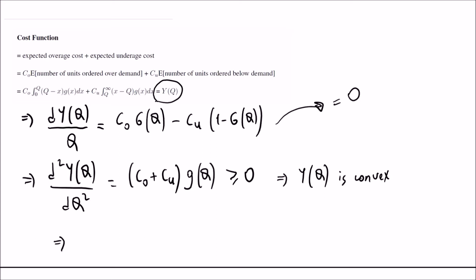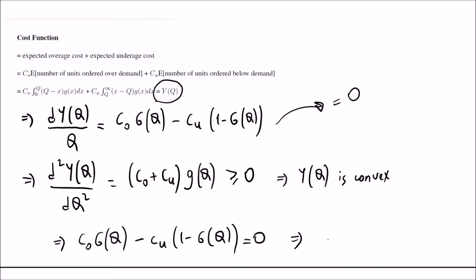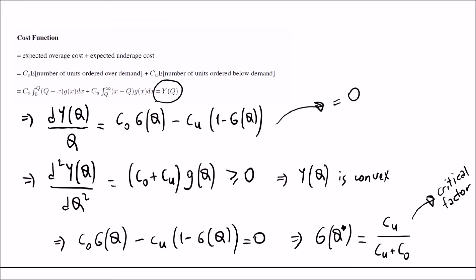Setting the first derivative equal to zero and solving, we find that G(Q*) equals CU divided by (CU plus CO), where Q* represents the optimal order quantity. This is a very critical value. We call CU divided by (CU plus CO) the critical factor — also known as the critical value or critical ratio.